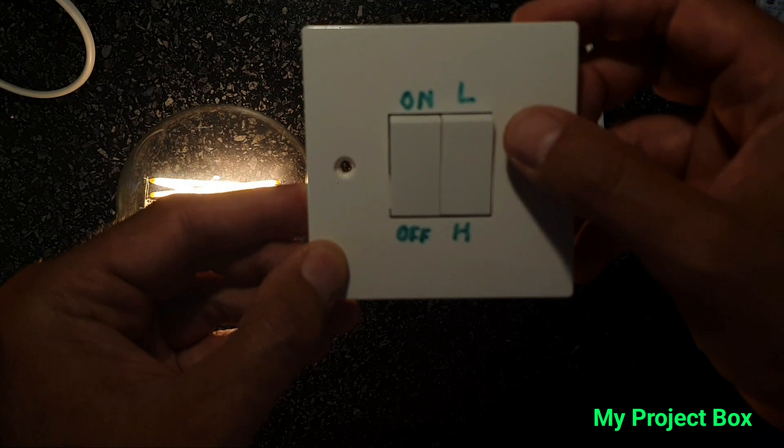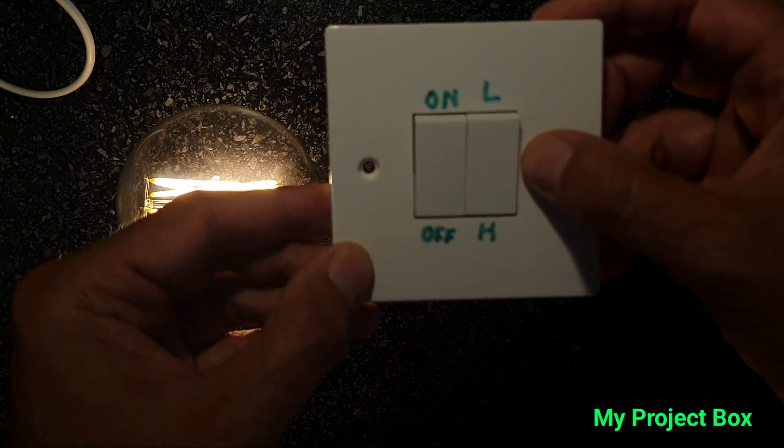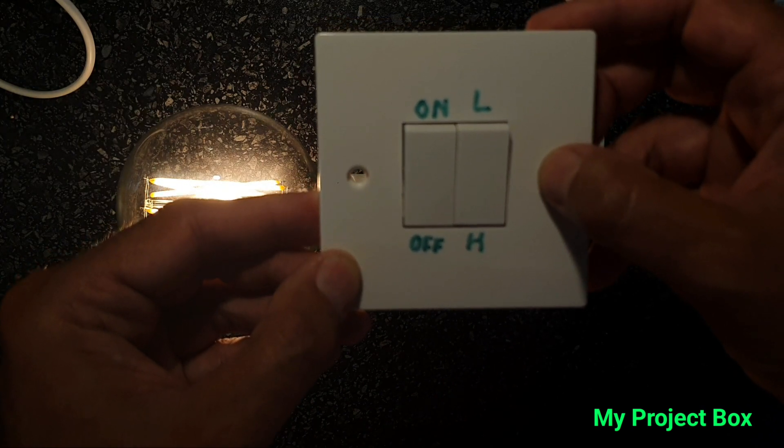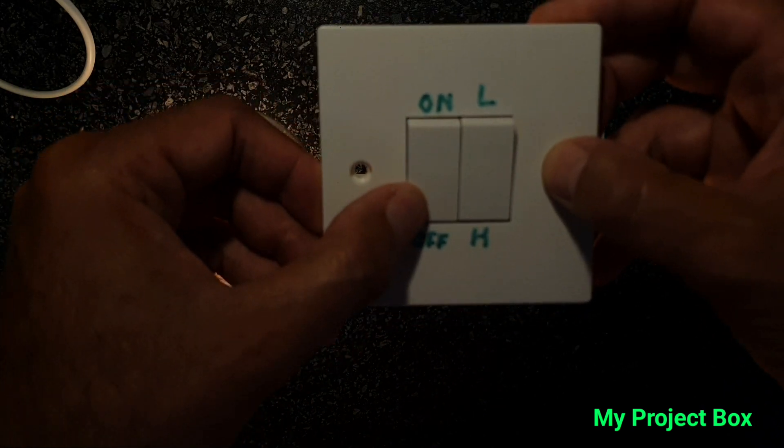So you choose the capacitor for the intensity you want for the low setting, and then you can have full brightness or just your low mood lighting setting. And the other switch can simply be on-off.